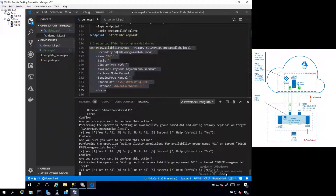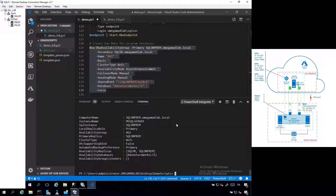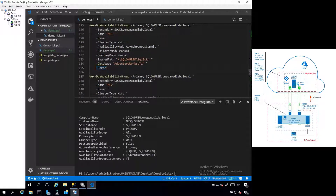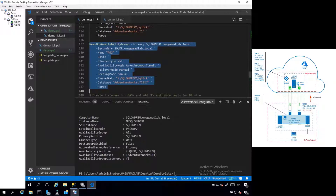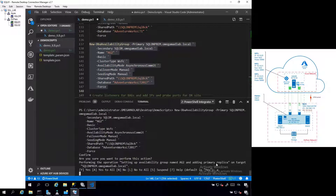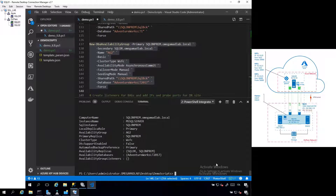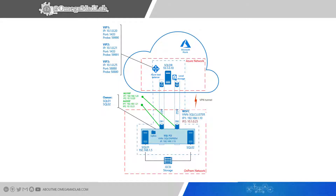Using the New-DbaAvailabilityGroup command from the DBATools module, which does the heavy lifting for you, I'm establishing the new availability group for the first database and then reissuing the command with updated parameters to establish the second basic availability group. It's now time to provision the availability group listeners. As shown in the schema, each listener has a couple of IP addresses — one for the on-premises network and one for the DR Azure network.